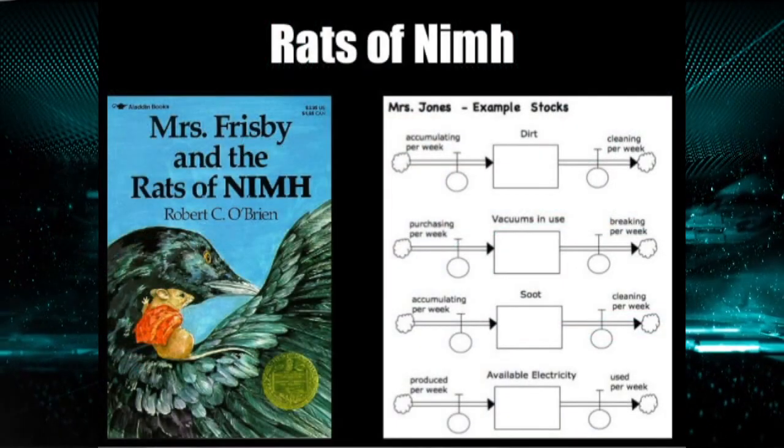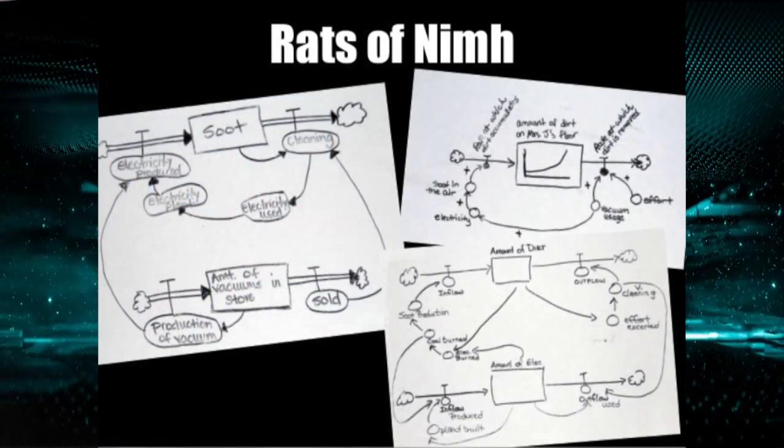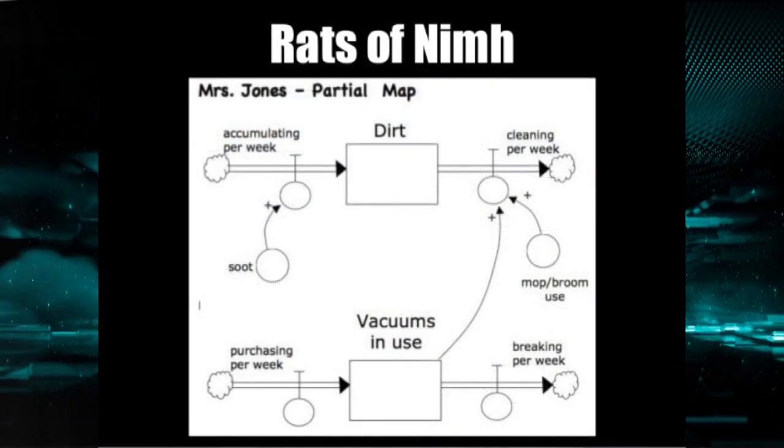Stock flow diagrams can become quite complex and involve many loops. This is an example from the storybook, Rats of Nim, looking at the systems involved in cleaning a house.